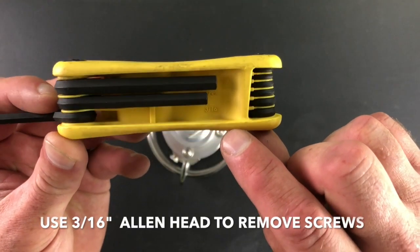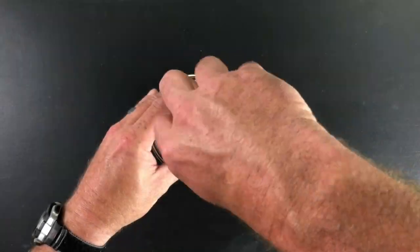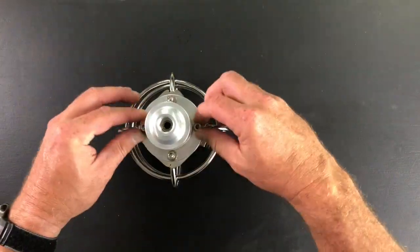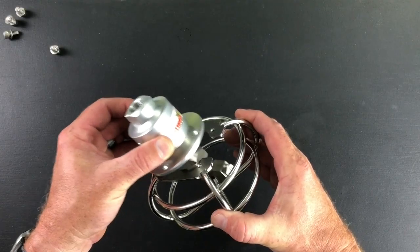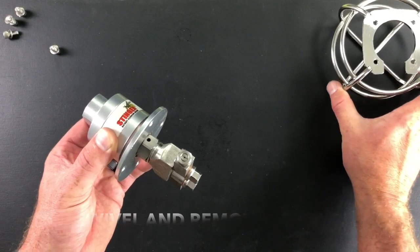Next use a 3/16 Allen wrench to remove all four screws securing the swivel to the cage. At this point you're now ready to remove the swivel. Do so by tipping it up and lifting.